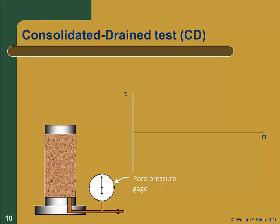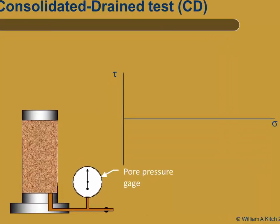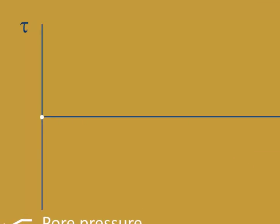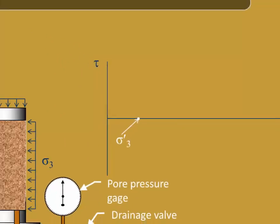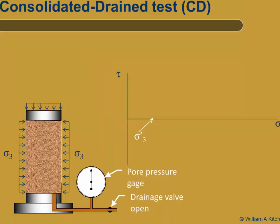Now let's consider the consolidated drained or CD test. In this test, the drainage valve remains open during both the consolidation and shear phases, and any excess pore pressures that might be generated are allowed to dissipate, so there is no excess pore pressure. Therefore, effective stress and total stress are equal — this is an effective stress test. During consolidation, the Mohr circle moves from a point at the origin to a point at the consolidation stress sigma3, which is an effective consolidation stress because there are no pore pressures, and the soil will consolidate and increase in strength.